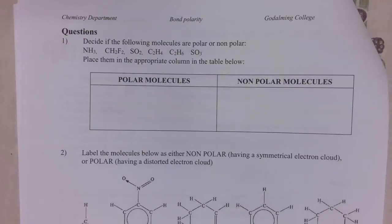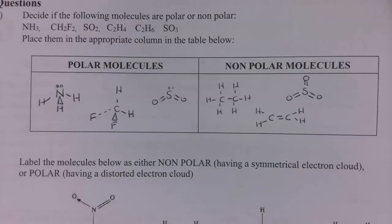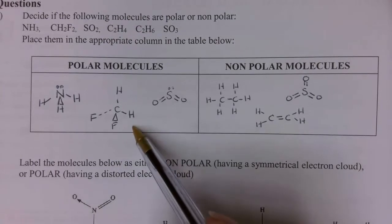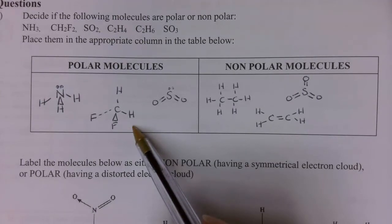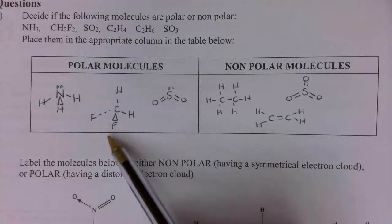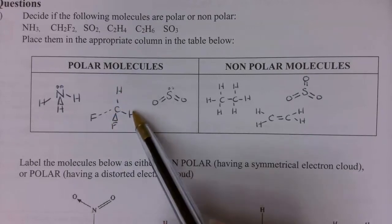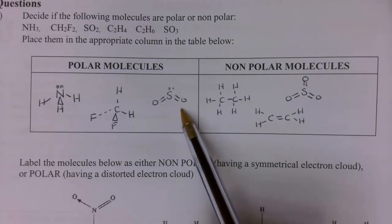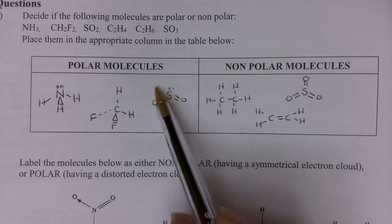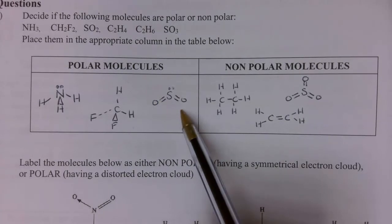Pause the video at this point and decide whether or not these molecules are polar or non-polar. These divide up into two sets — three polar and three non-polar molecules. The one that students get confused with is difluoromethane. You have to remember that this is a tetrahedral molecule not a planar molecule, so the bond polarities are not going to cancel out — you've got a side which is delta positive and a side which is delta negative. Also SO2 is a polar molecule. When you compare it with CO2 — CO2 is a linear molecule and therefore the bond polarities cancel out, but SO2 is not linear, it is bent, and therefore the bond polarities do not cancel out.